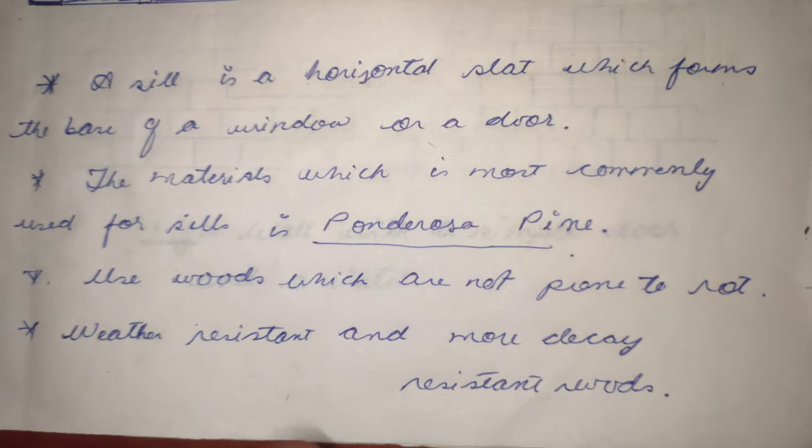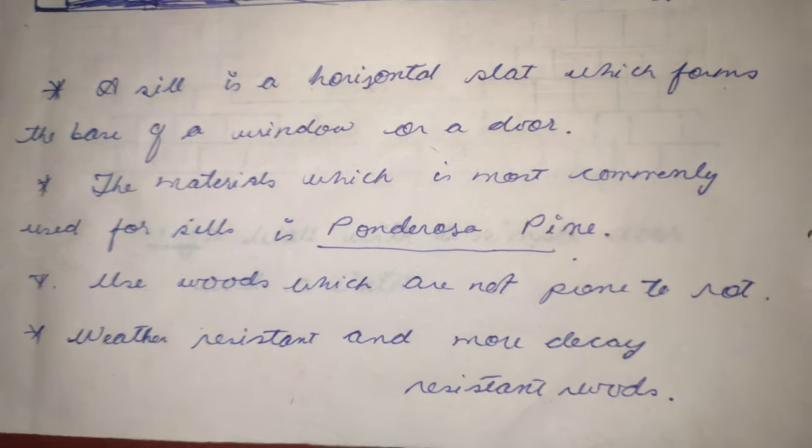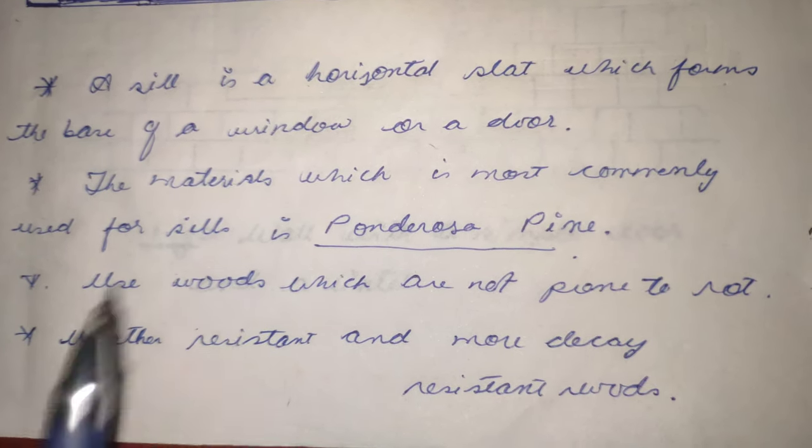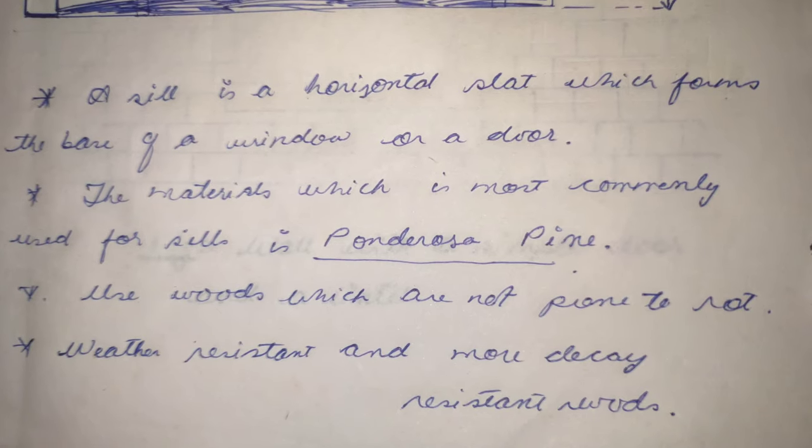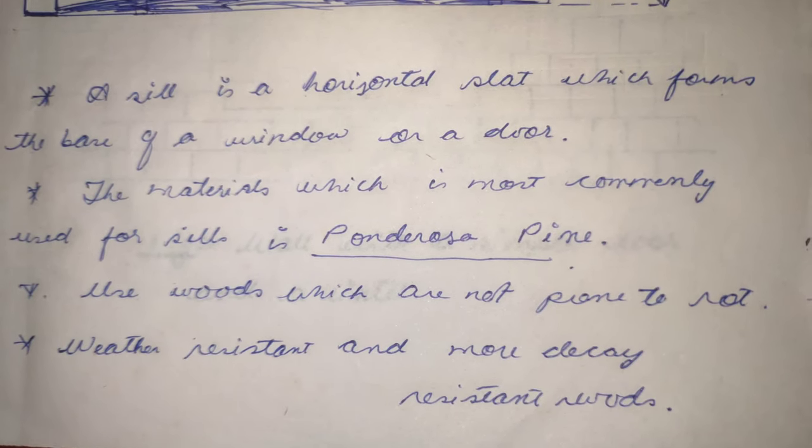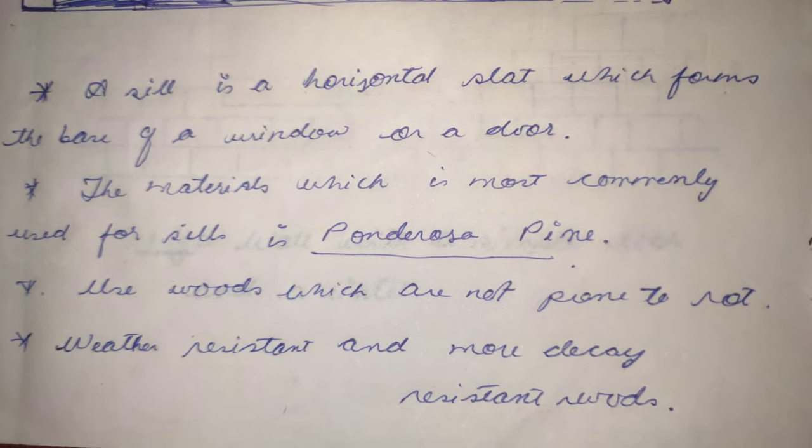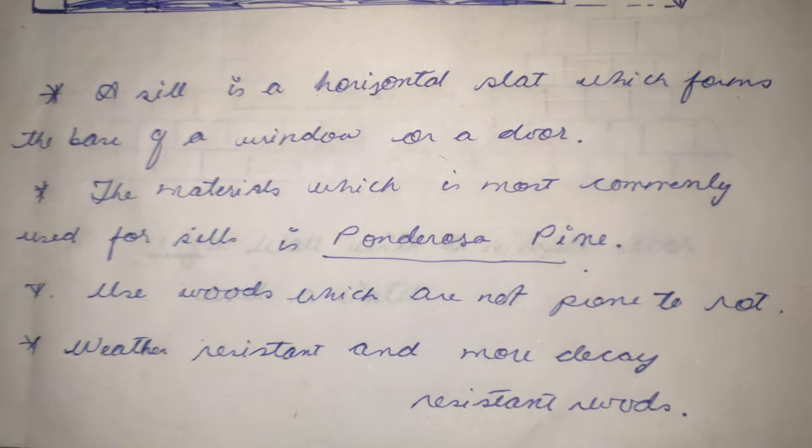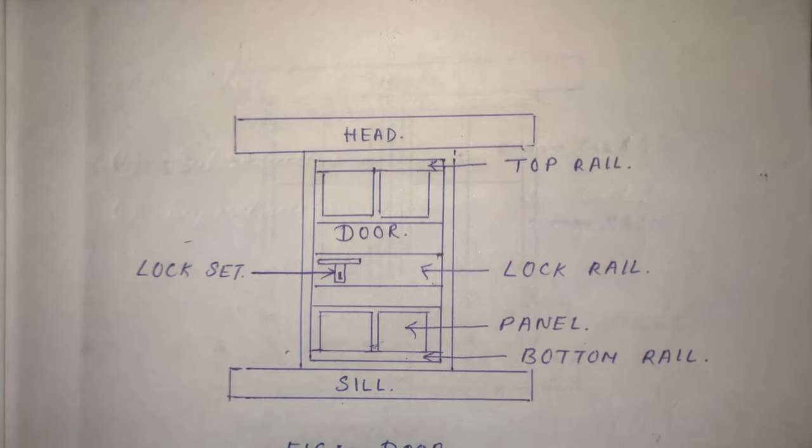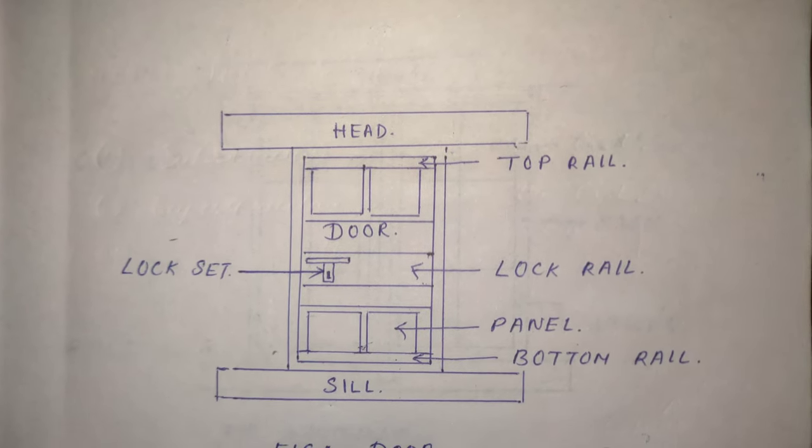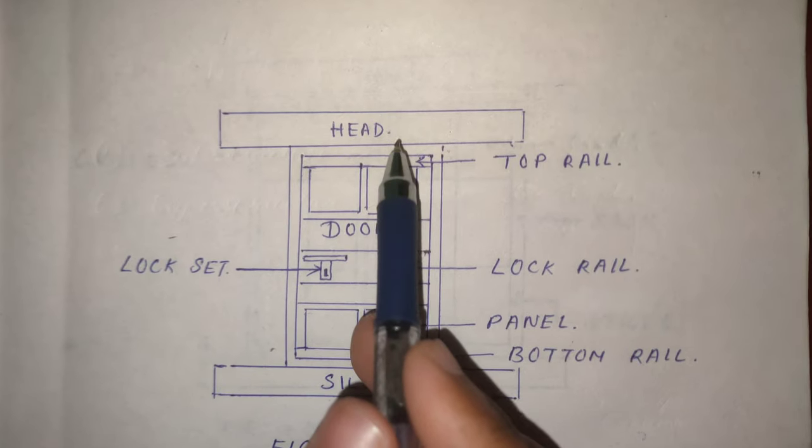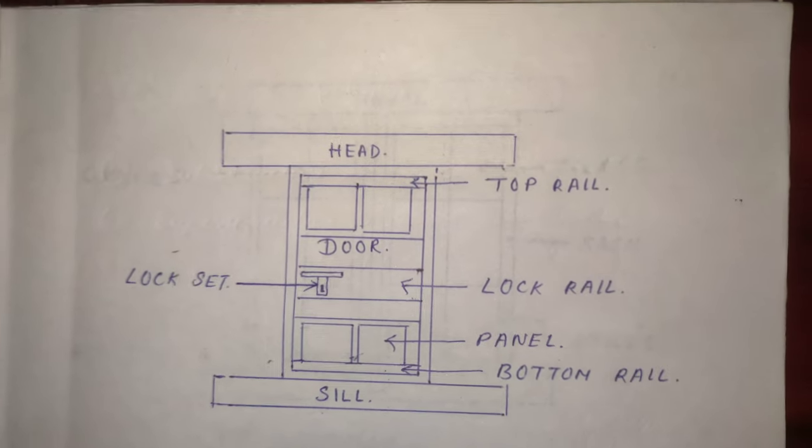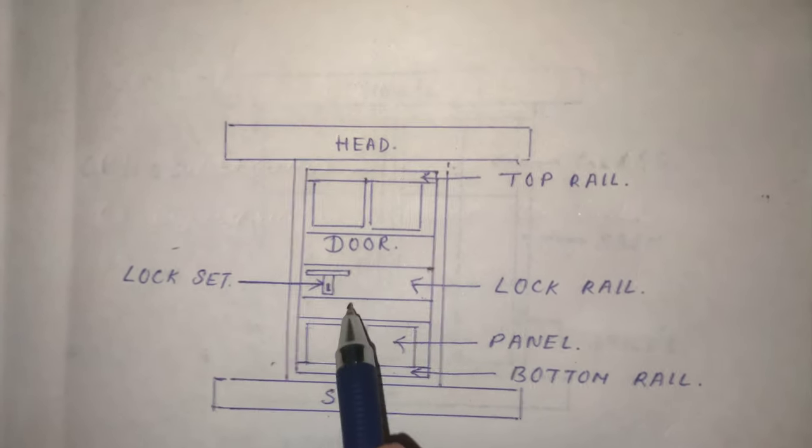So this is all about sills. A sill is a horizontal member; the most commonly used sill material is Ponderosa Pine, and the woods must not be prone to rot and must be weather resistant and decay resistant. This is just a normal diagram of a door. The uppermost part is known as the head, the lowermost part is known as sill, both in doors and windows. This is the lock set, this is the lock rail,